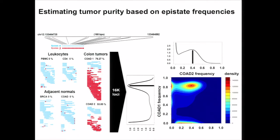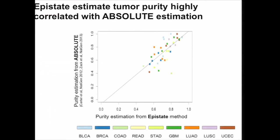To validate our approach, we compared our results with ABSOLUTE estimations. The X-axis is the estimation from our method and the Y-axis is from ABSOLUTE. The results correlate well, except for one sample that appears to have very few copy number variation changes, which may affect the accuracy of the ABSOLUTE estimation.